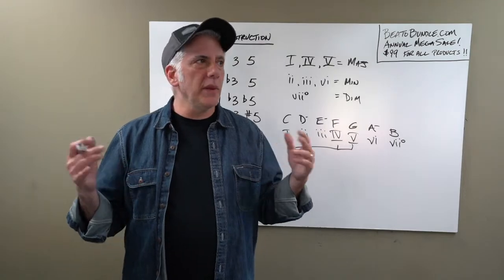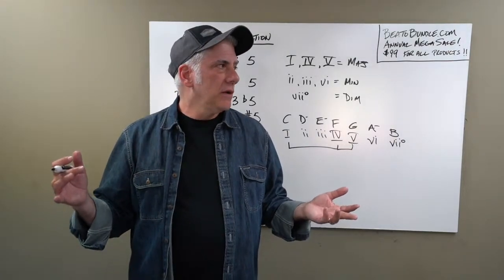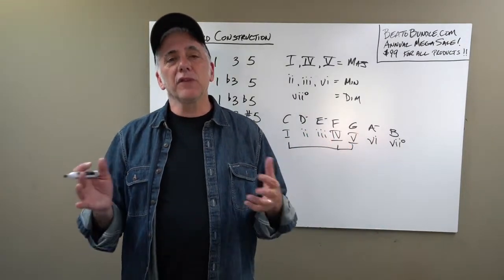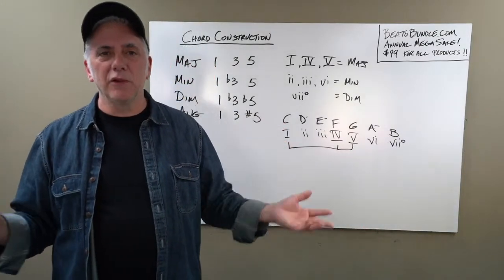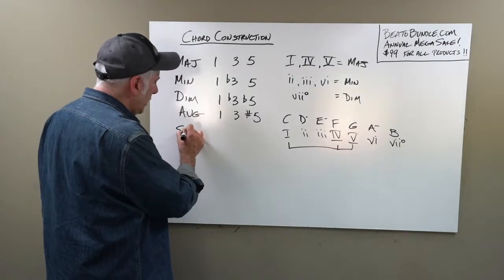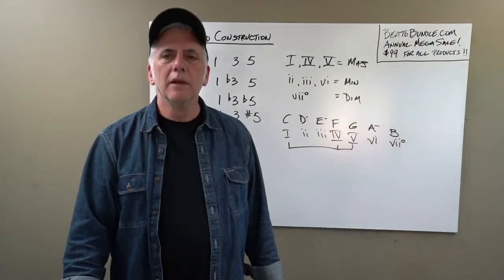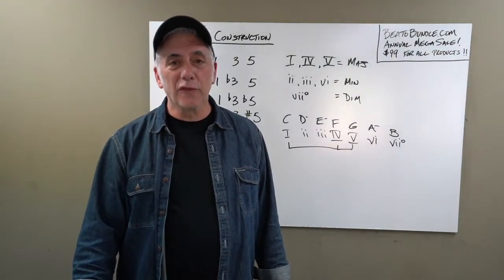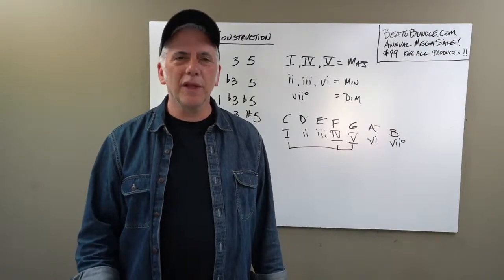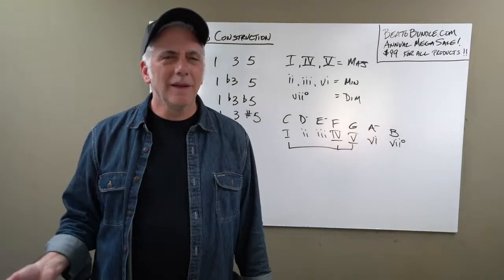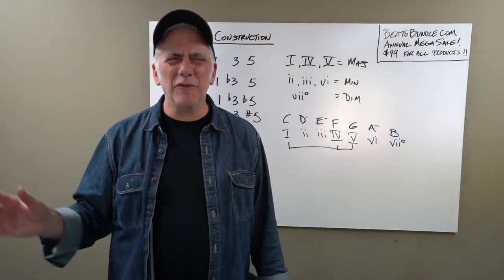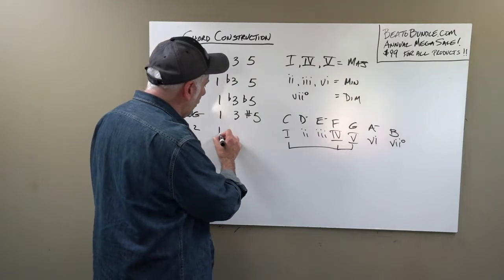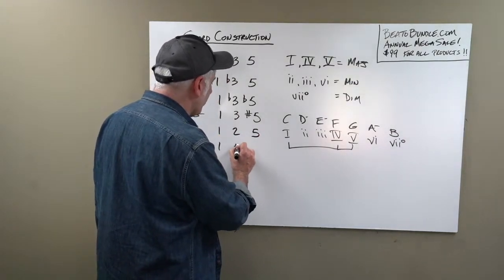In pop music, jazz, or really any style, you have things like suspended chords. Sus two is 1, 2, 5; sus four is 1, 4, 5. These are very common — James Taylor, Led Zeppelin, Billie Eilish — everybody uses these chords. In C major, sus two would be C, D, G, and sus four would be C, F, G.